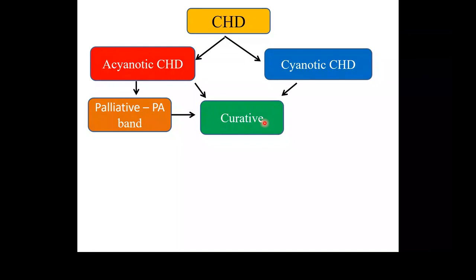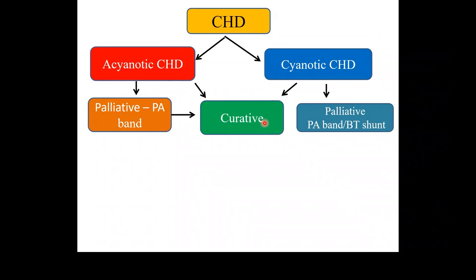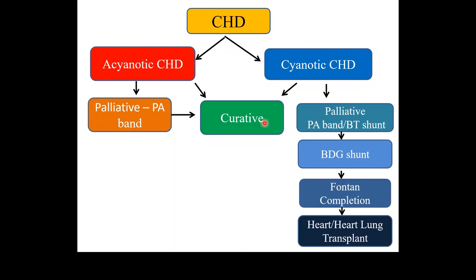Cyanotic heart lesions can be curative — for example TGA and TOF — but certain ones require palliation: PA band or BT shunt, followed by bidirectional Glenn shunt, then Fontan completion, and ultimately heart or heart-lung transplant. A TOF that is very blue in the neonatal period may get a BT shunt, then at around one year the BT shunt is removed and a full correction done — so palliation leading to curative surgery.